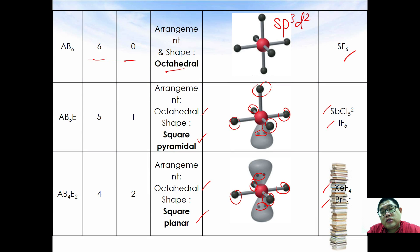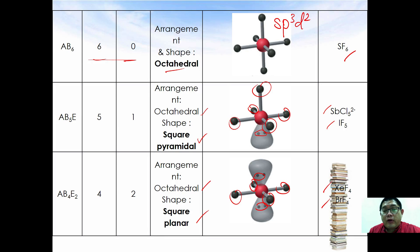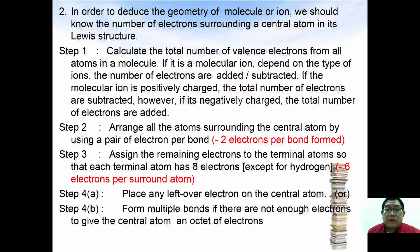Now, how do we identify the shape and arrangement? We deduce it based on the number of bond pairs and lone pairs. To identify these, here are easy steps to draw the Lewis structure. Step 1: calculate the total number of valence electrons from all atoms in the molecule. If the molecule is an ion, add or subtract electrons accordingly depending on the charge.